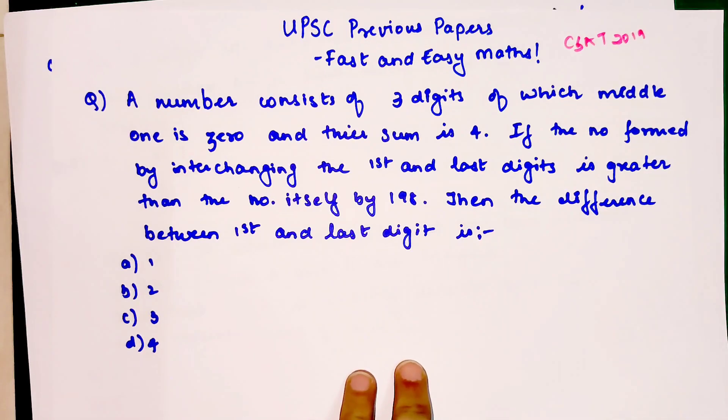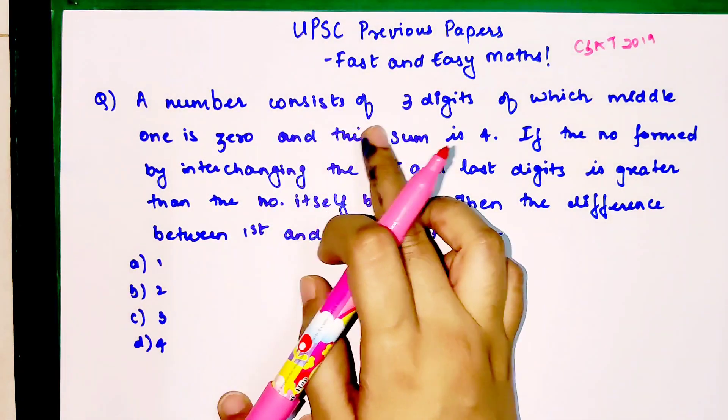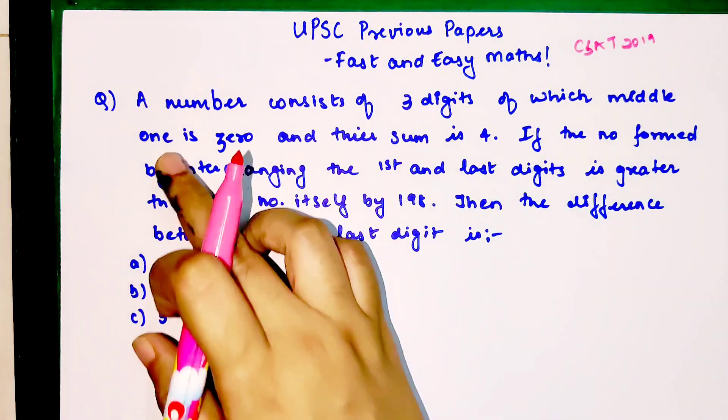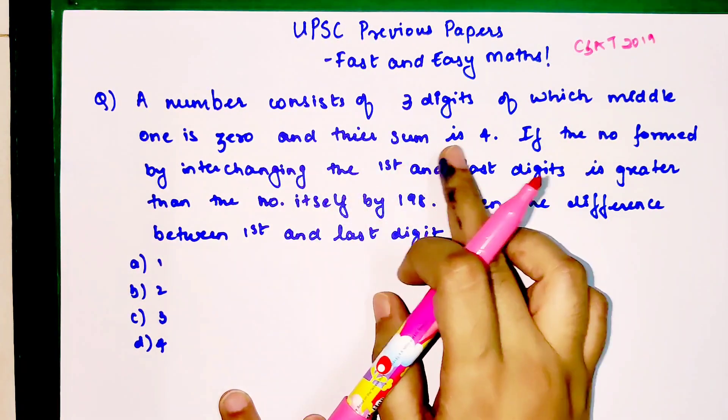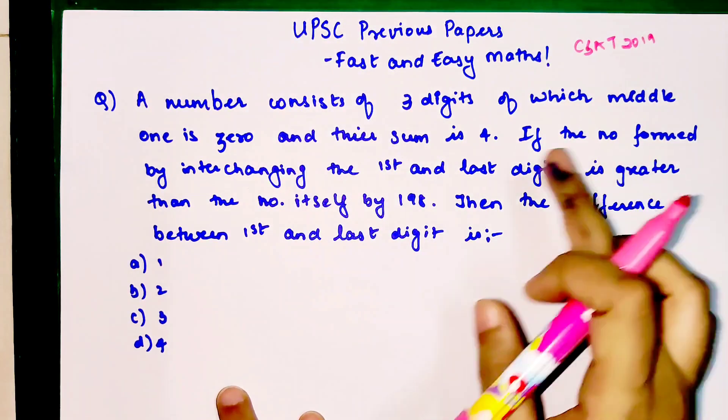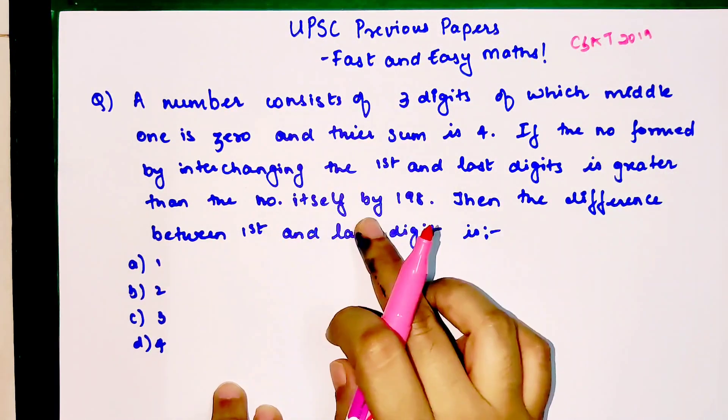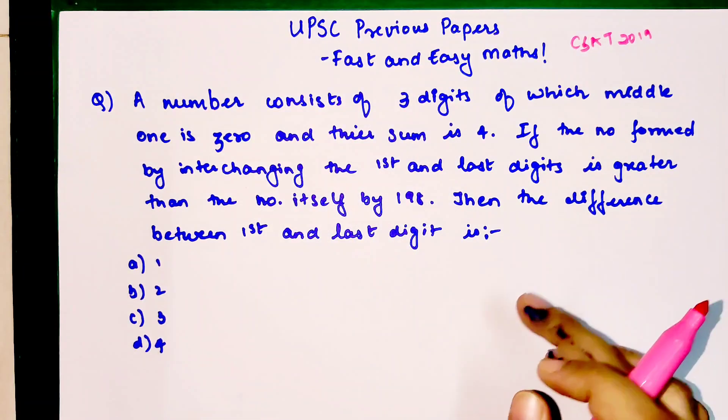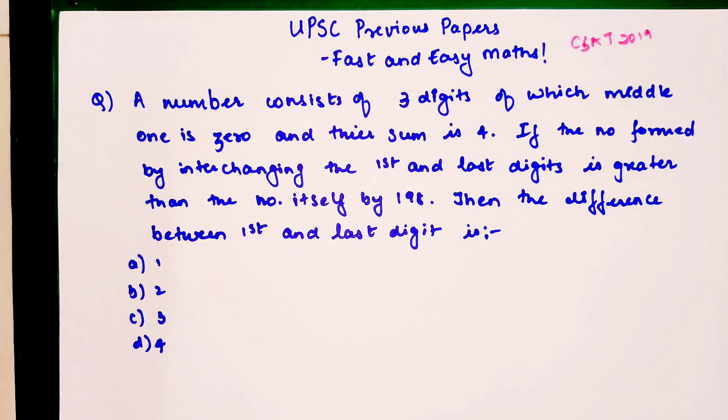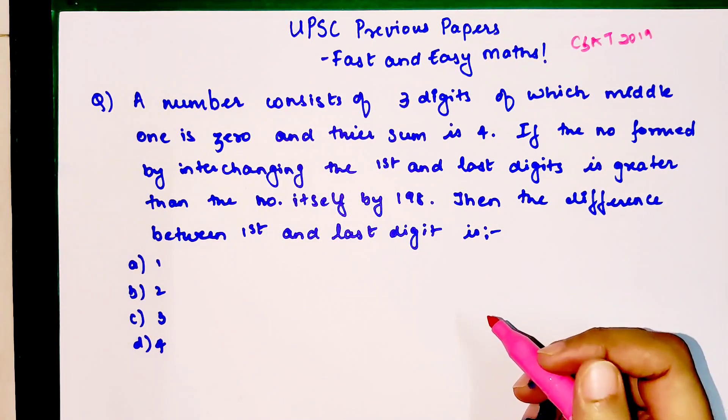The number consists of three digits of which the middle one is zero and their sum is four. If the number formed by interchanging the first and last digit is greater than the number itself by 198, then the difference between first and last digit will be what?